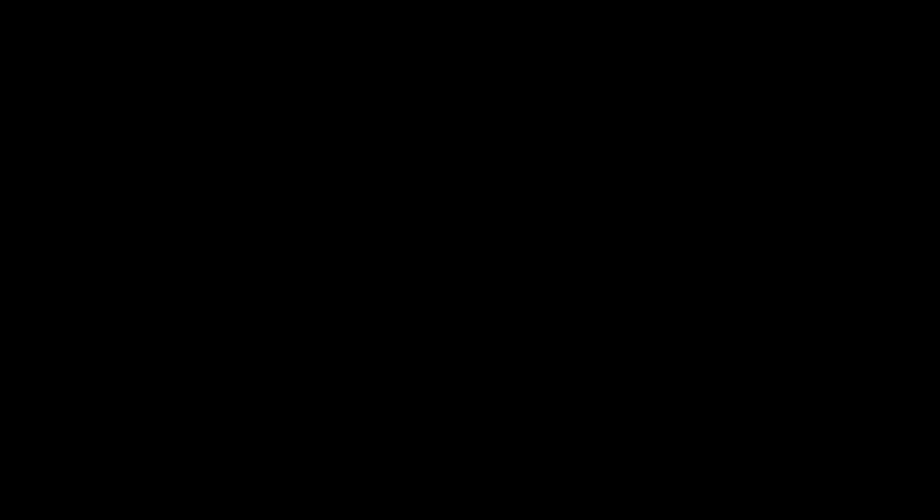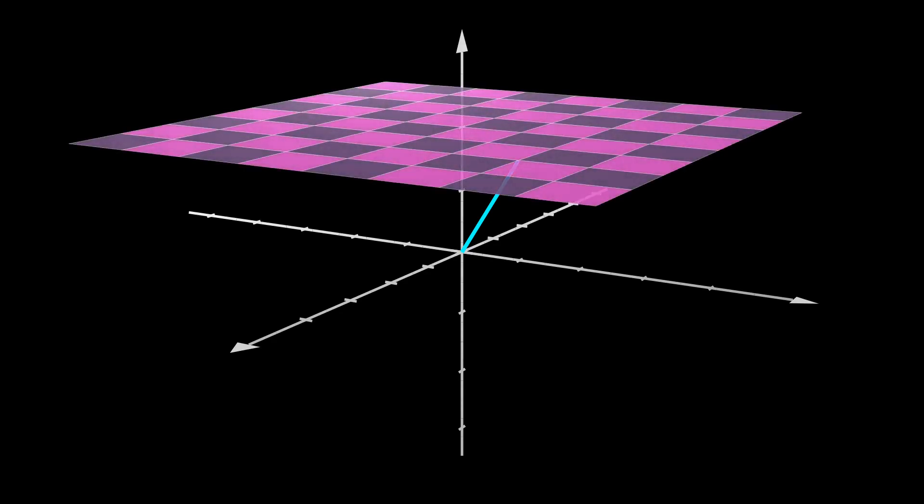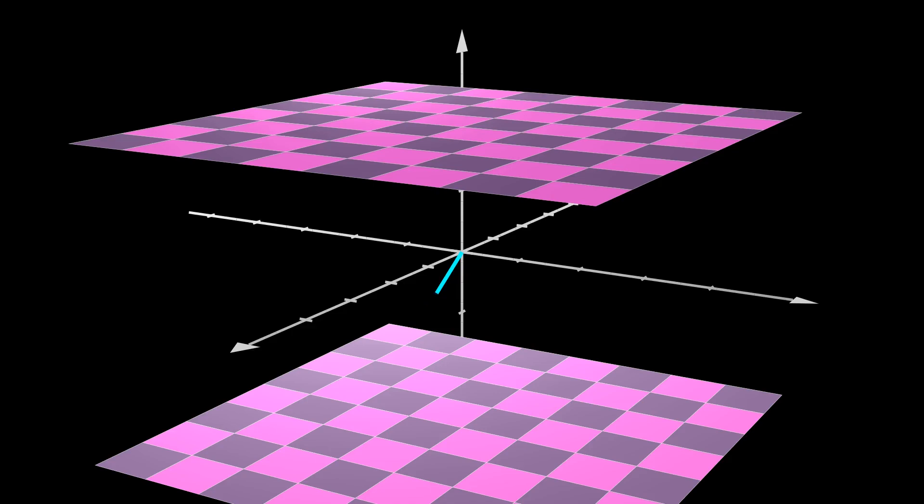And this process can be continued. If we introduce a third vector, we can use it to sweep the plane through the third dimension. 3D space requires three basis vectors.